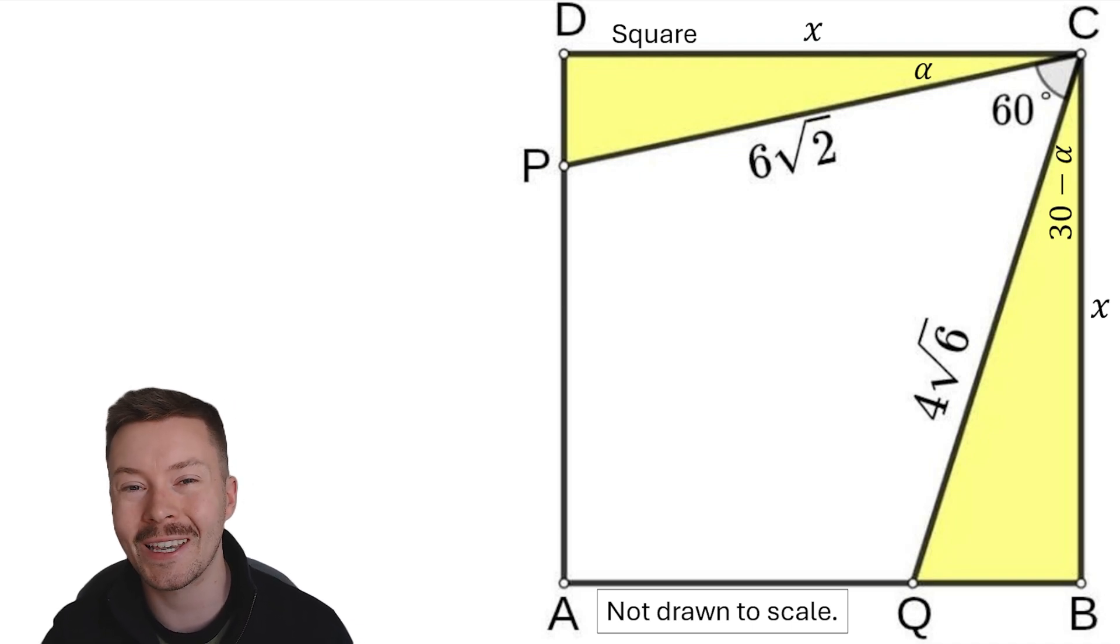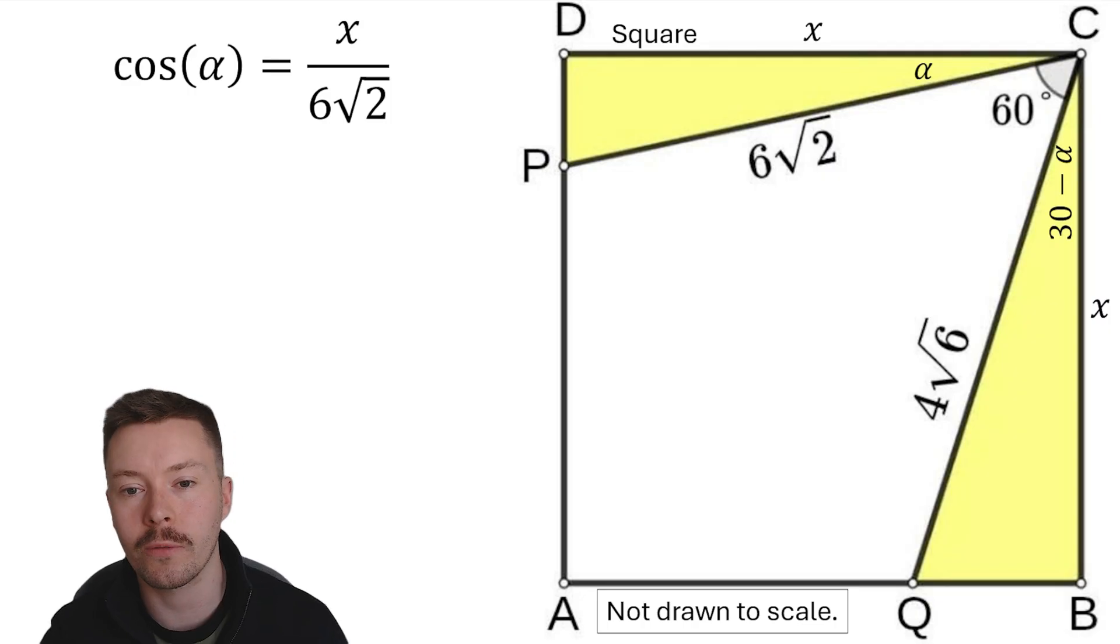Looking at triangle CDP, I'm going to use cosine. Cos of the angle is adjacent over the hypotenuse, so we're going to get cos of alpha is x over 6 root 2.